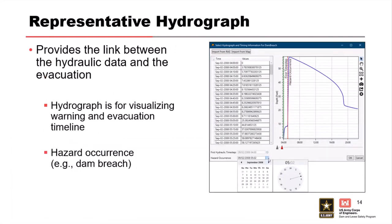So whatever method you use to bring it in, you'll have some sort of representative hydrograph you'll want to define. Most importantly, you're going to want to set the hazard occurrence time — how much after the dam breaks did they decide it was time to evacuate? To have that relative time, you want your anchor point. The hazard occurrence time gets set off of a representative hydrograph. This one is pulled from right below a dam, so you see it's going to spike way up. That is the moment the dam breaches and everything else in that timeline is relative to this point.